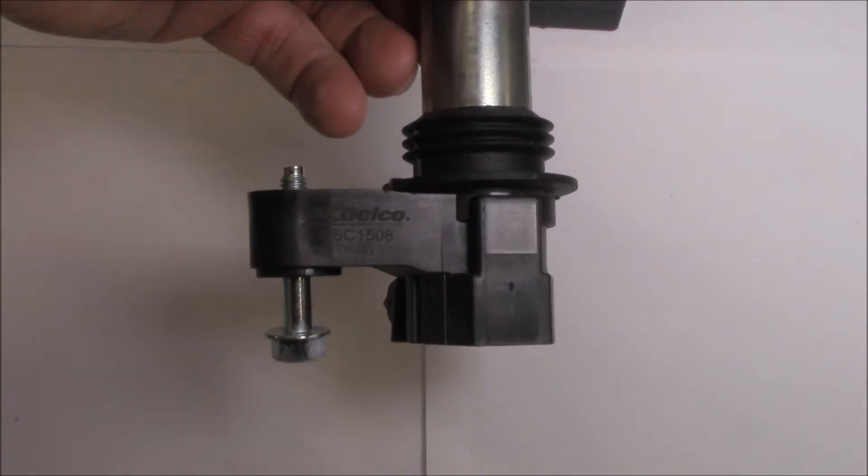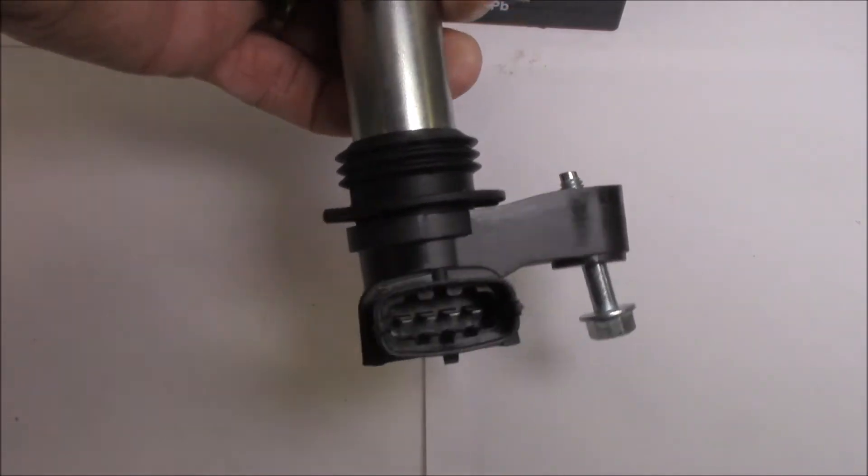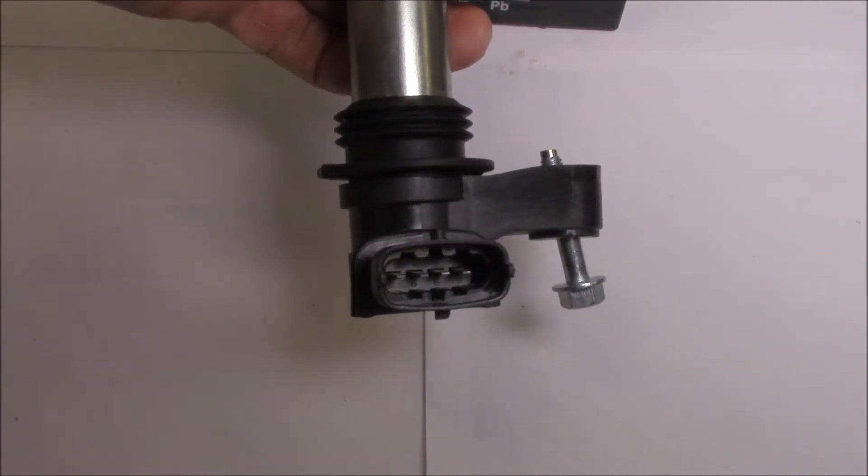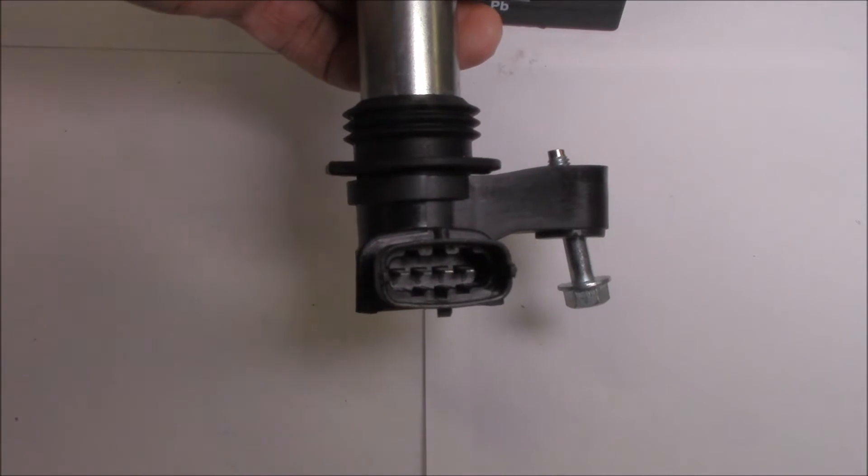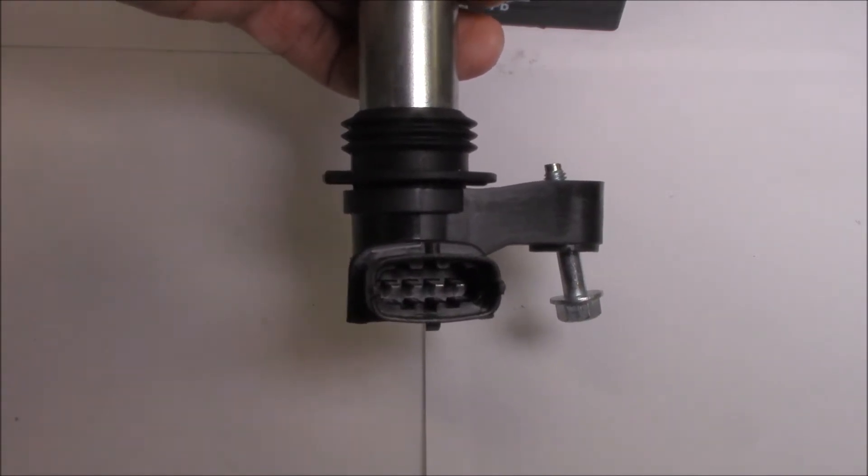Here's a testing procedure for the ACDelco coil-on-plug ignition coil with a four-wire connector. These four-wire ones you have to be careful with because they are wired differently to other four-wire styles. So let's have a quick look at the wiring diagram.